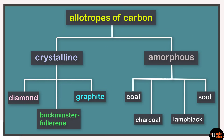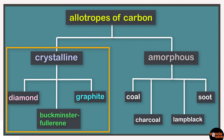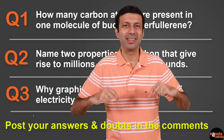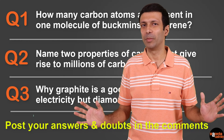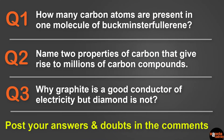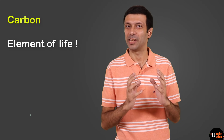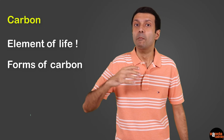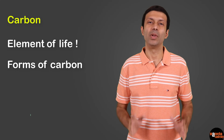Carbon also has amorphous allotropes such as coal, charcoal and lamp black, but in this video our focus was on the three crystalline allotropes of carbon. Now that we are done with the concepts, are you ready for the top three questions on this topic? Friends, try solving these questions and let me know your answers and doubts by putting them in the comments below. In this video, we looked at carbon, the element of life, and the different forms of the element carbon. There are millions and millions of compounds containing carbon, but we'll look at that in a separate video.